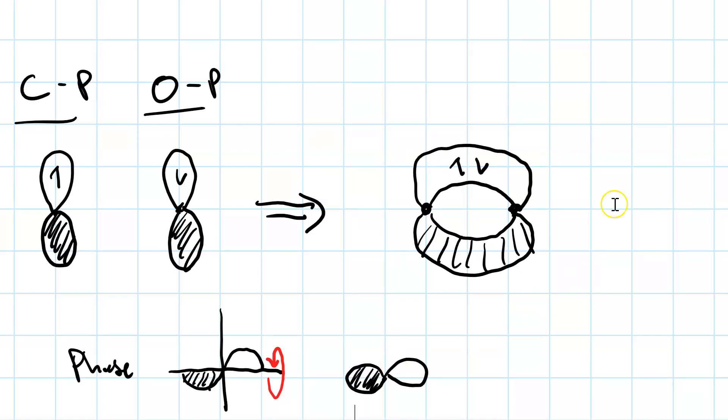So what we've got here is a pi orbital. Pi orbitals are always formed from a p overlapping with a p, and they have two lobes of electron density, and it's pi because the electron density is outside the bond axis. We've got the lobe above and the lobe below, but on the bond axis is a node.